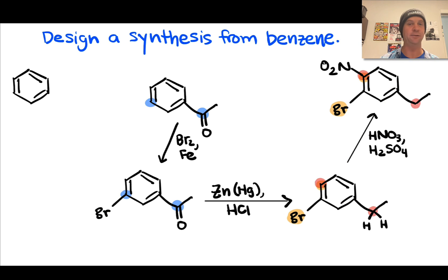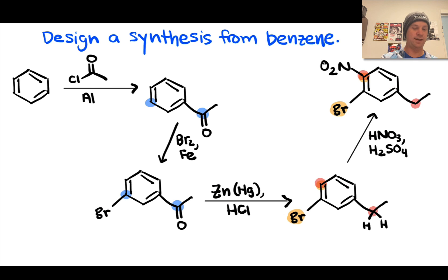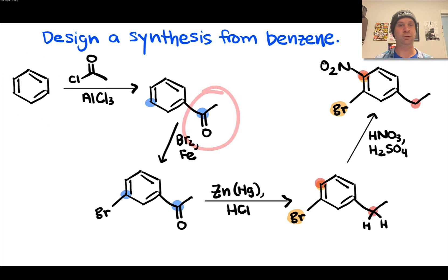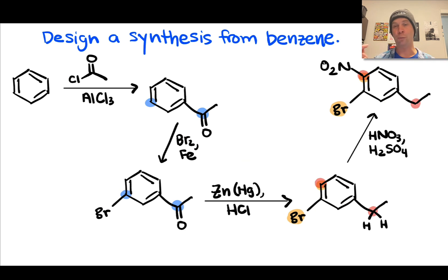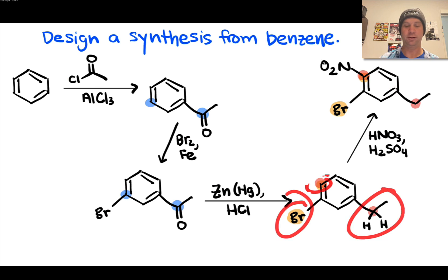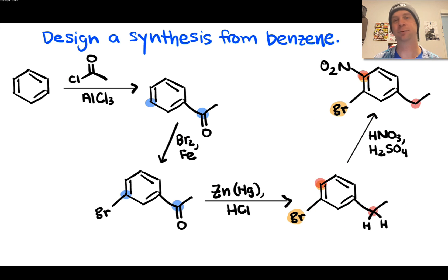Working acetophenone back to benzene in the forward direction is done via Friedel-Crafts acylation: acetyl chloride with AlCl₃ installs the acetyl group on unsubstituted benzene with no directing issues. To summarize the forward synthesis: (1) Friedel-Crafts acylation installs the acetyl meta director; (2) bromination places bromine selectively meta to it; (3) Clemmensen reduction converts acetyl to ethyl, flipping it to an ortho/para director; (4) nitration then occurs at the reinforced position directed to by both bromine and ethyl, delivering the tri-substituted nitrobenzene target.